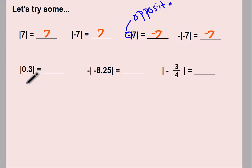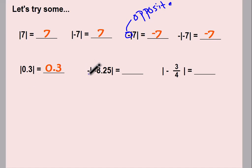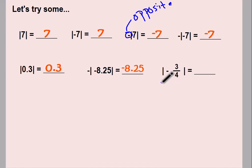It doesn't matter if the number inside is a decimal or a fraction — you treat it the same way. You're still looking at the distance from zero, and distance must be positive. So the absolute value of three-tenths is three-tenths. With a negative symbol on the outside, the opposite of the absolute value of negative 8.25 is negative 8.25. If there's no negative symbol on the outside, the answer is positive — so the absolute value of three-fourths is positive three-fourths. Great job, Bobcats!